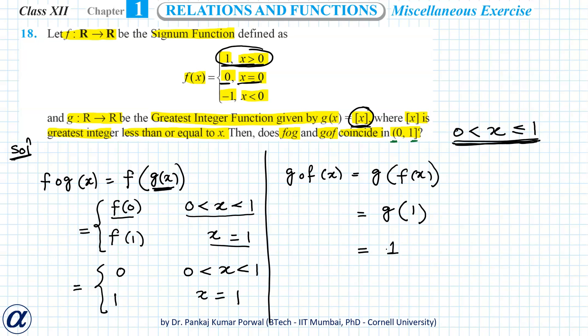So gof(x) is always equal to 1 for all x in the interval 0 < x ≤ 1, whereas fog(x) equals 0 when 0 < x < 1 and equals 1 only when x equals 1. Therefore, fog and gof do not coincide on the interval (0, 1].